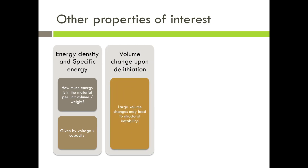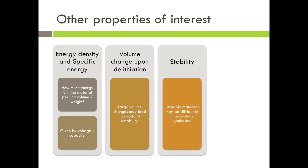Another property that is important is the volume change upon delithiation. Large volume changes during delithiation may lead to structural instability. The stability of a material is another important property of an electrode. Unstable materials may be difficult or impossible to synthesize.